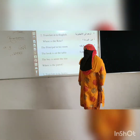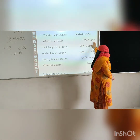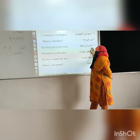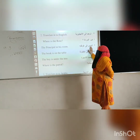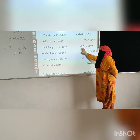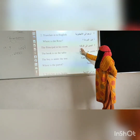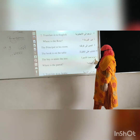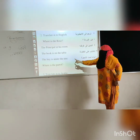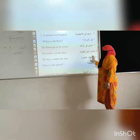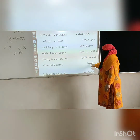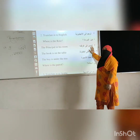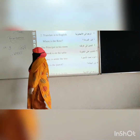Here you can see the answers. Number one: where is the rose? Number two: where is the rose? Number three: the principal is in the office. Number four: the book is on the table. Number five: the boy is under the tree — it is very easy because this book is separate from the place. Number six: where is the pen? Now our exercise from the book continues.